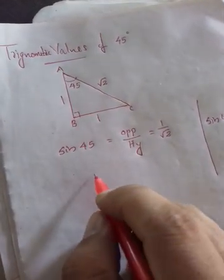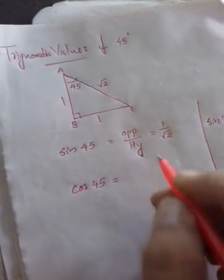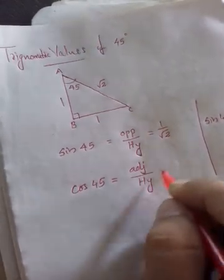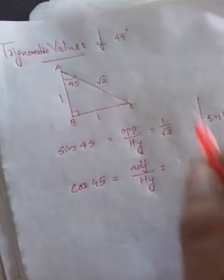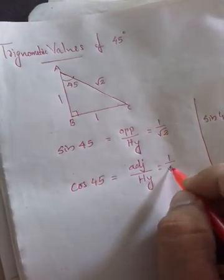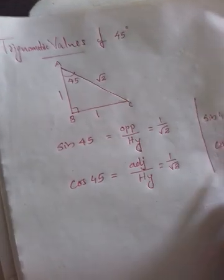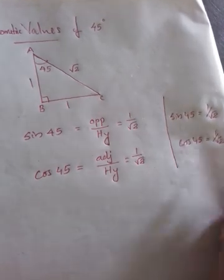Again, cos 45. Cos means adjacent by hypotenuse. The adjacent side is also 1 and the hypotenuse is root 2, giving the same value, 1 by root 2. That is, cos 45 is 1 by root 2.